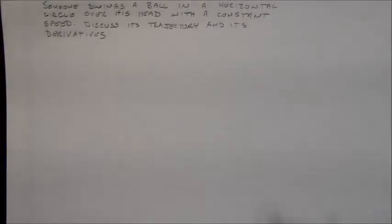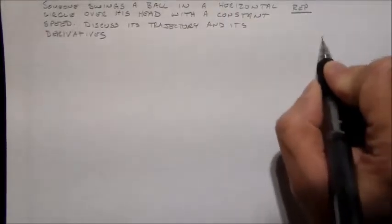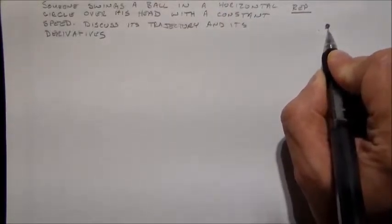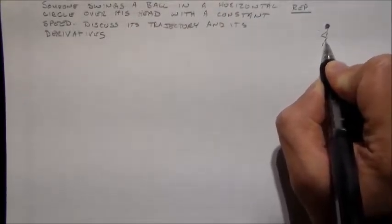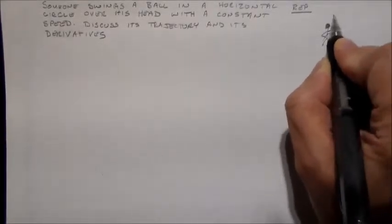Hi, I'd like to look at an example here for taking some derivatives. So what I'd like to do is look at this situation here, and I'll draw it out, where I've got some guy, right, standing around, and he's swinging a rope over his head. So there's a rope here.